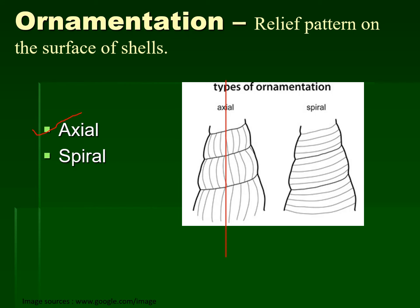In contrast, spiral type ornamentation occurs along with the growth of the gastropod shell — it is parallel to the spiral motion of the gastropod shell, or in other words perpendicular to the axis of coiling, since gastropods basically grow in the spiral motion of growth. These ornamental elements are parallel to this spiral motion of growth, which is why they are known as spiral ornamentation. So: parallel to the axis of coiling is axial ornamentation; parallel to the spiral growth is spiral ornamentation.